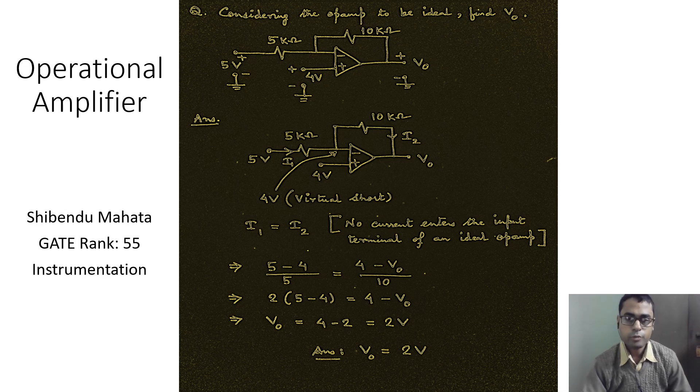This is a numerical problem from operational amplifier. Here is the question: considering the op-amp to be ideal, find out V_naught. So this is an ideal op-amp circuit and we can find that the voltage to